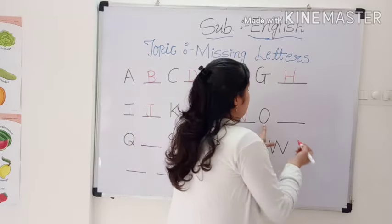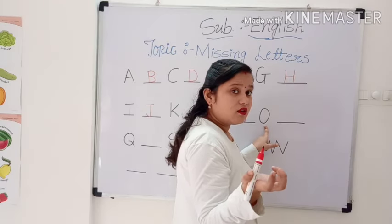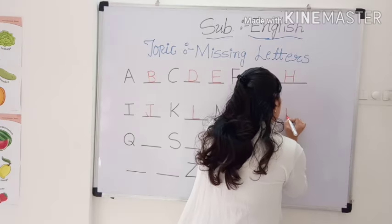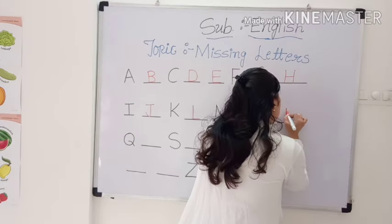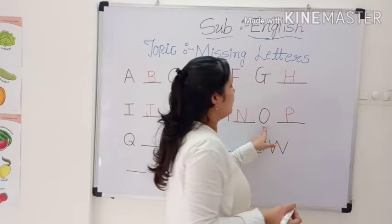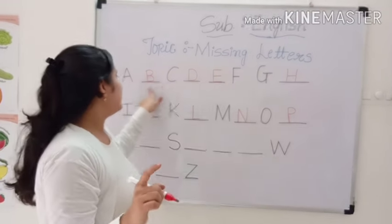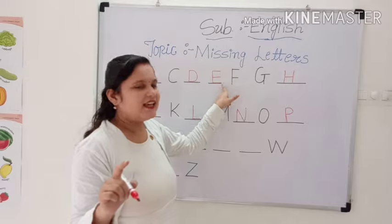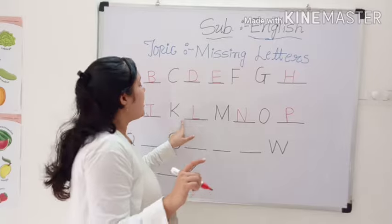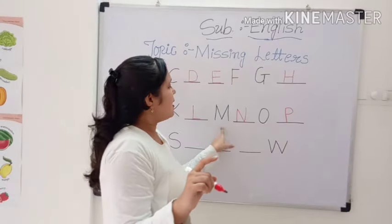And what comes after O? P. Very good. Capital letter P. O, P. Once again. A, B, C, D, E, F, G, H, I, J, K, L, M, N, O, P. L, M, N, O, P. After that, Q. Now, which letter comes after Q? R.